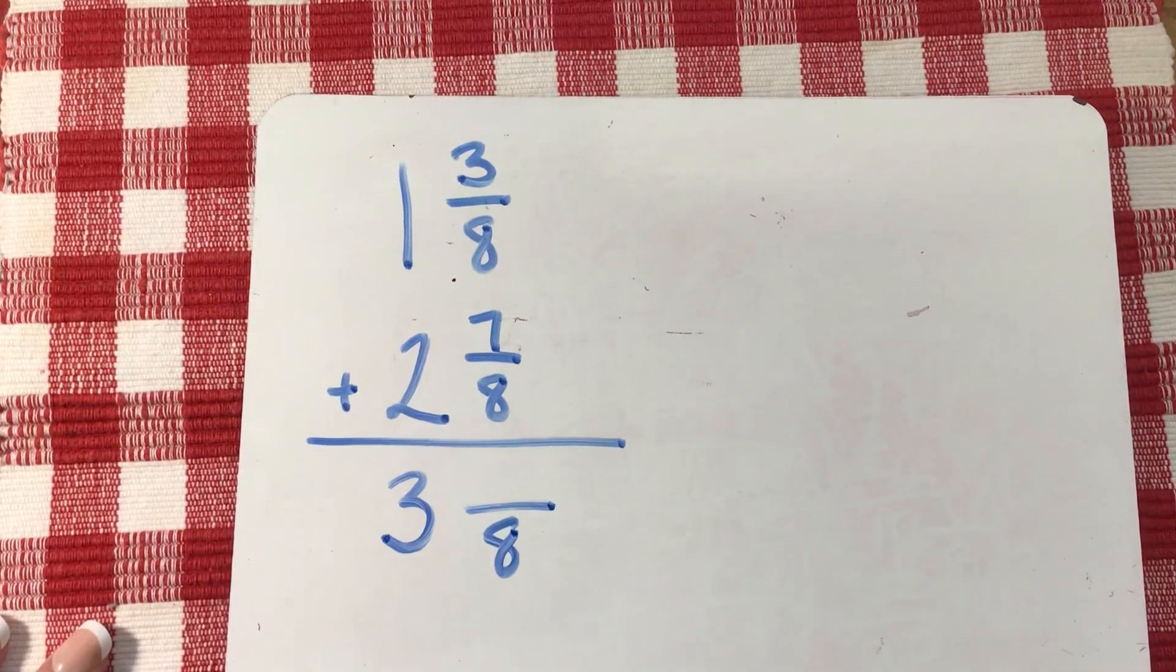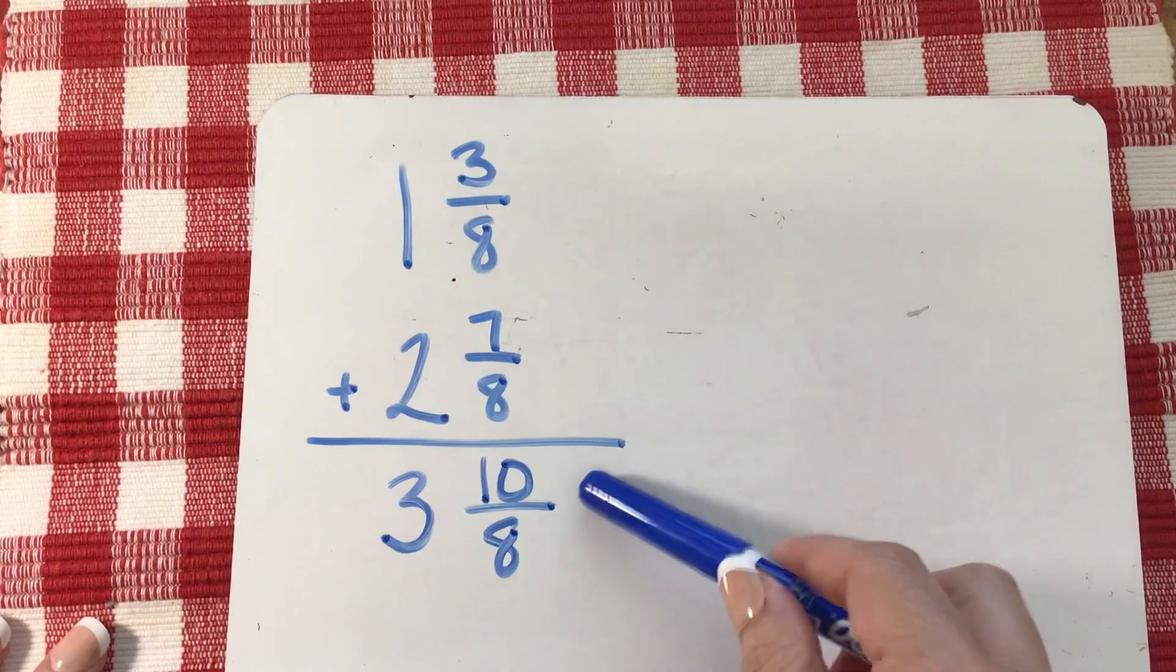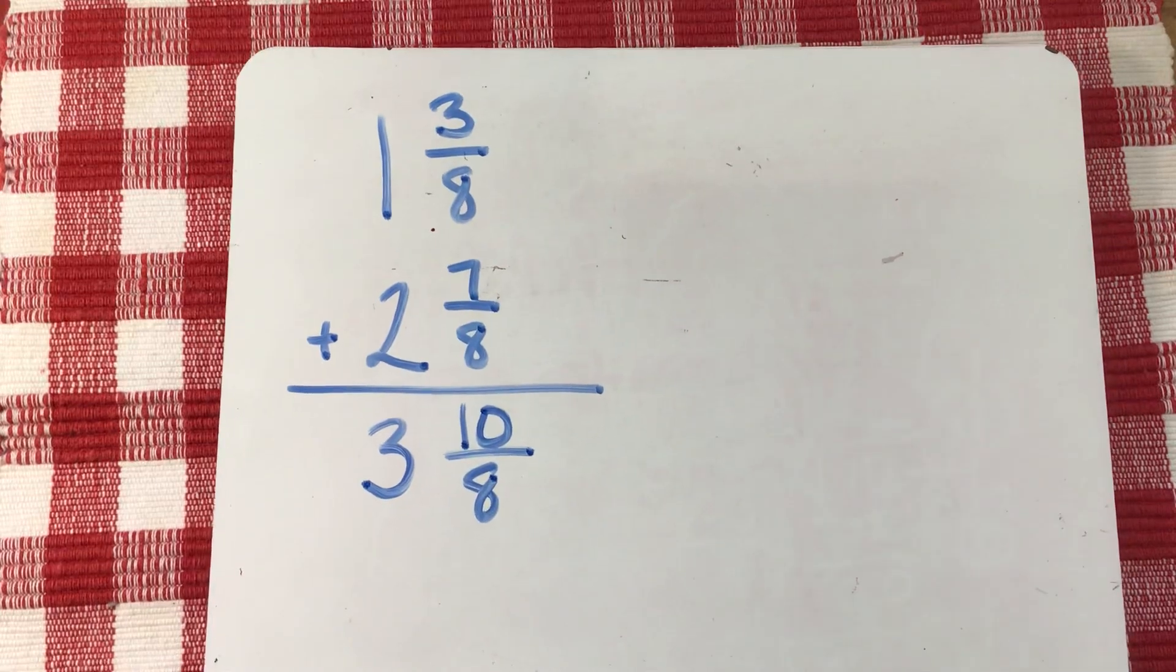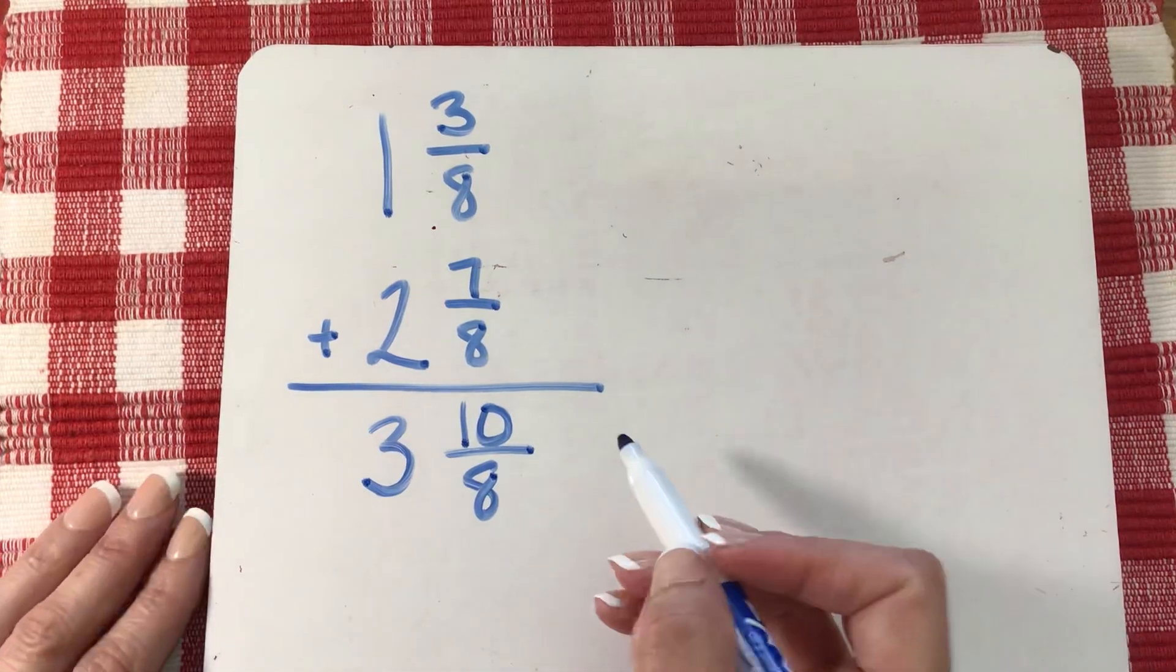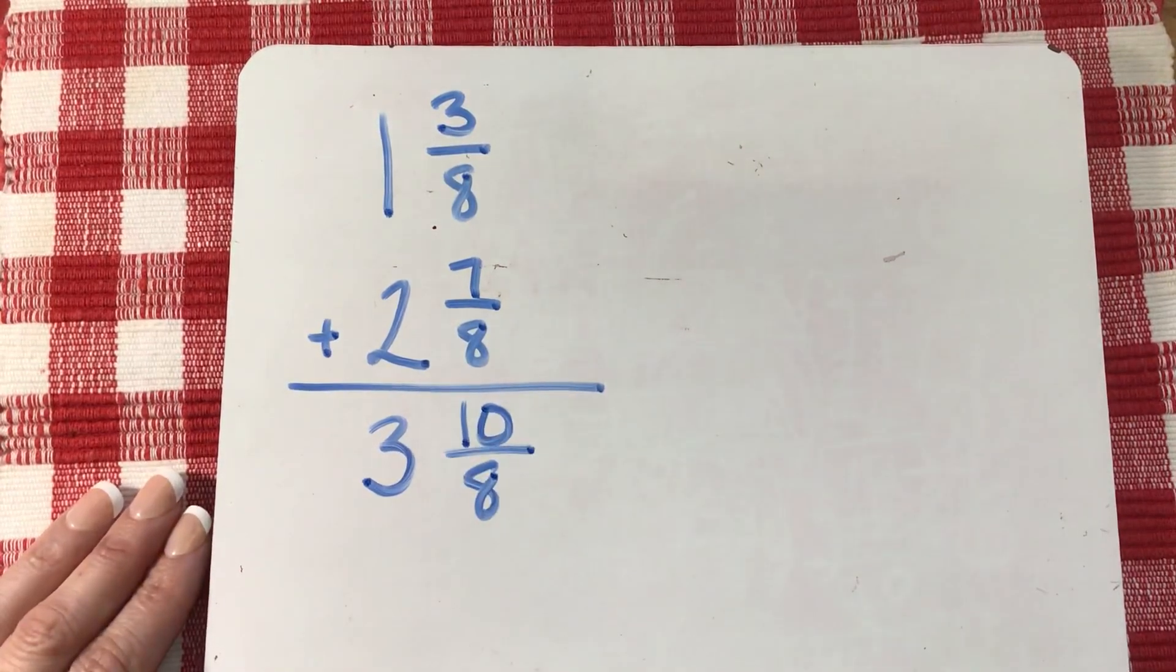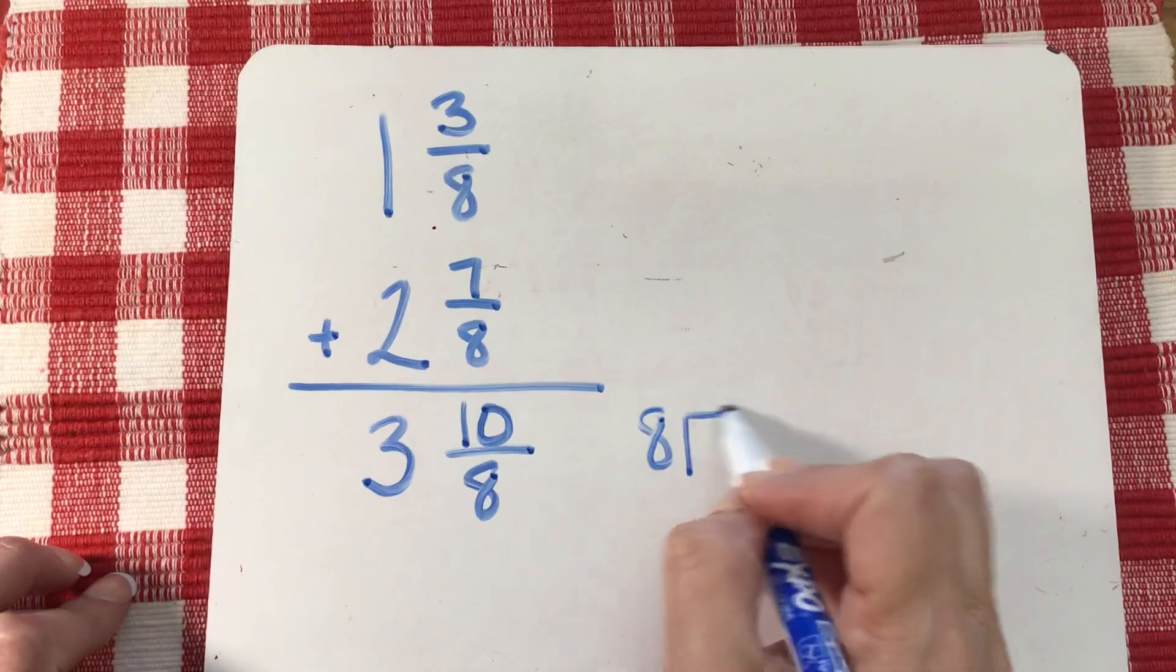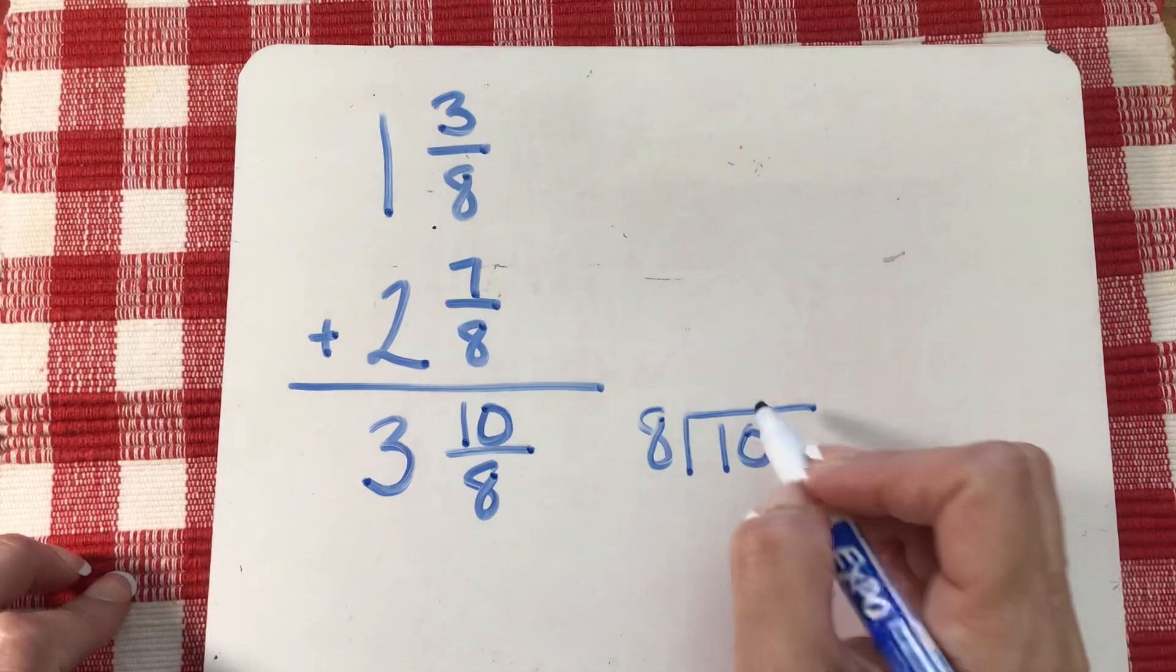Remember this is an improper fraction and I cannot leave it in that form. In order to change an improper fraction to a mixed number, we have to do a division problem. We are going to take our eight and divide it into ten. Ten is my dividend, that's the number inside the house. Eight is my divisor, the number on the outside of the house. Eight times what gets you close to ten? Eight times one.